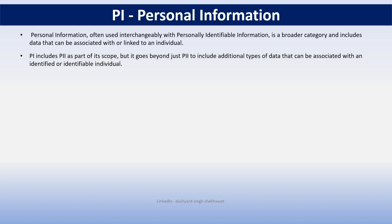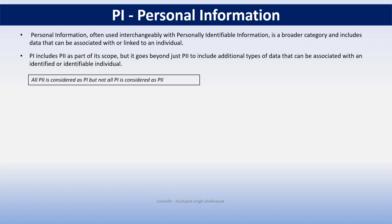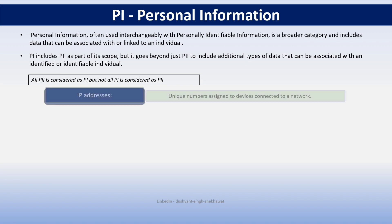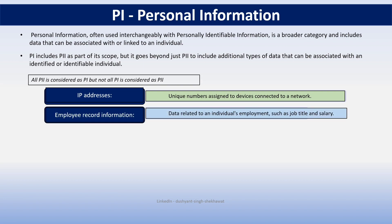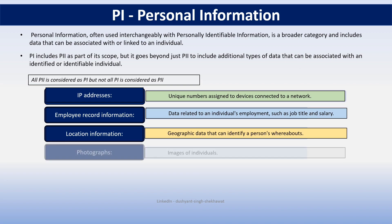All PII is PI, but not all PI is PII — read that statement carefully. For example, your IP address is personal information but not personally identifiable information — it is PI, not PII. Employee record information like your job title or salary is your personal information but not PII, unless it is used combined with other information. Your location information and photographs are also examples of personal information, PI.